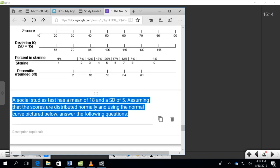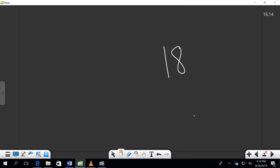So it says that the test had a mean of 18 and a standard deviation of 5. Let's put those numbers into play here. We had a mean of 18 and a standard deviation of 5.